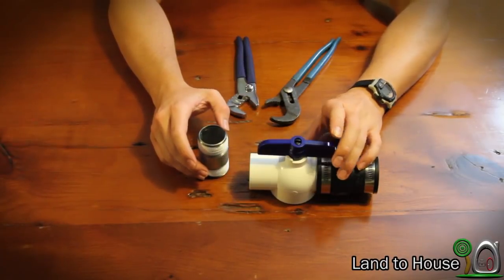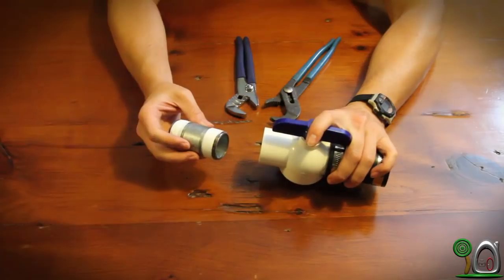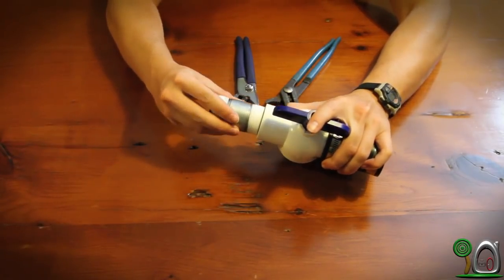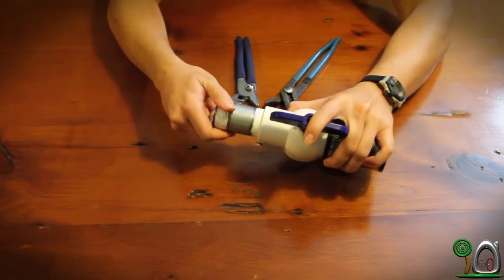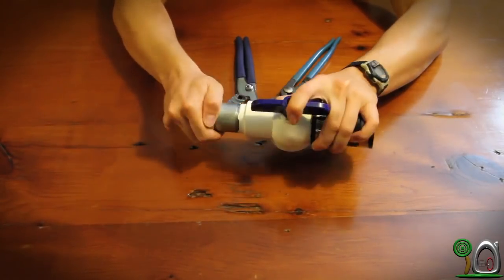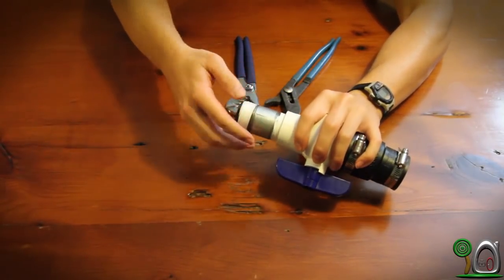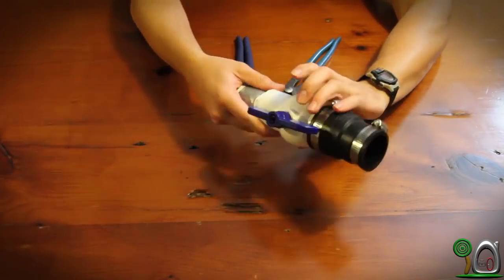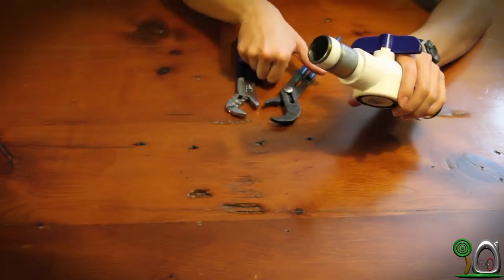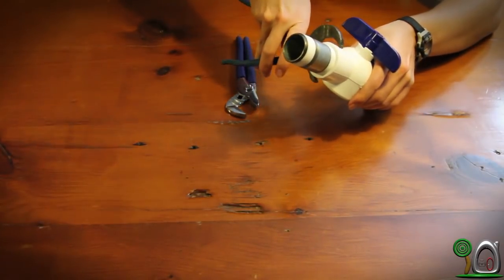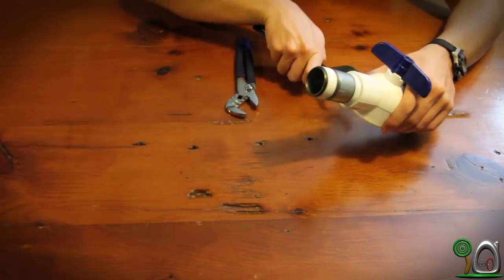Step 3. Take your ball valve and one of the 1.25 pipe nipples and screw this in, being careful to match up the threads evenly. And you're going to want to tighten this fairly tight. And you can use some wrenches. Just be sure not to pull too tight because you will strip the threads.